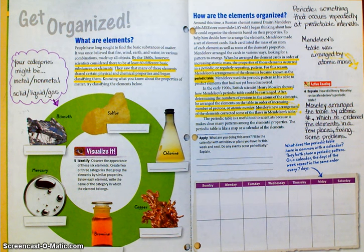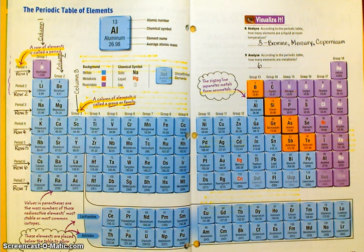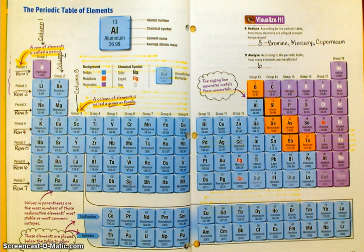Taking a look at pages 128 and 129: I underlined that a row of elements is called a period. The row that hydrogen and helium occupy is period one. Period two is lithium, beryllium, boron, carbon, nitrogen, oxygen, fluorine, and neon. Period three is sodium, magnesium, aluminum, silicon, phosphorus, sulfur, chlorine, and argon. Period four is much longer because there are more items in it, followed by rows five, six, and seven.